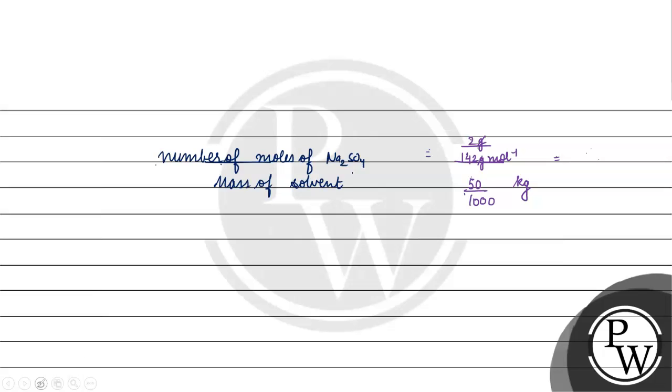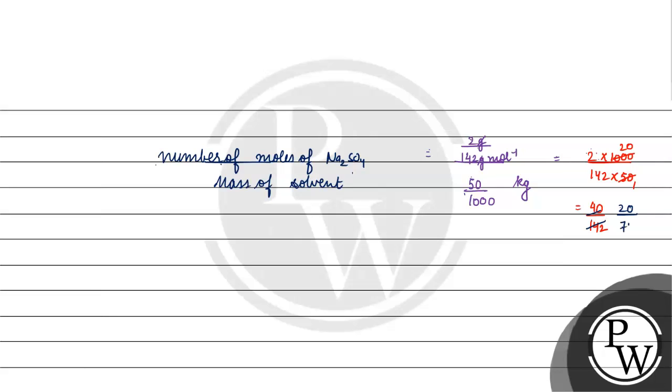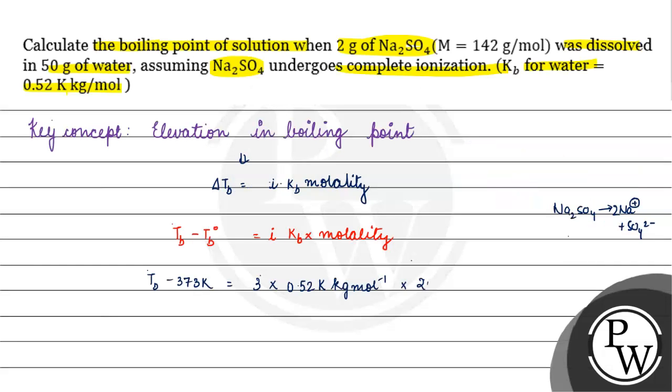We can write this as 10 to the power minus 3. Now we will solve this: 2 into 1000 by 142 into 50. Then we will have 2040 by 142. If we cut 2, we get 20 by 71 mol per kg. We put 20 by 71 mol per kg.